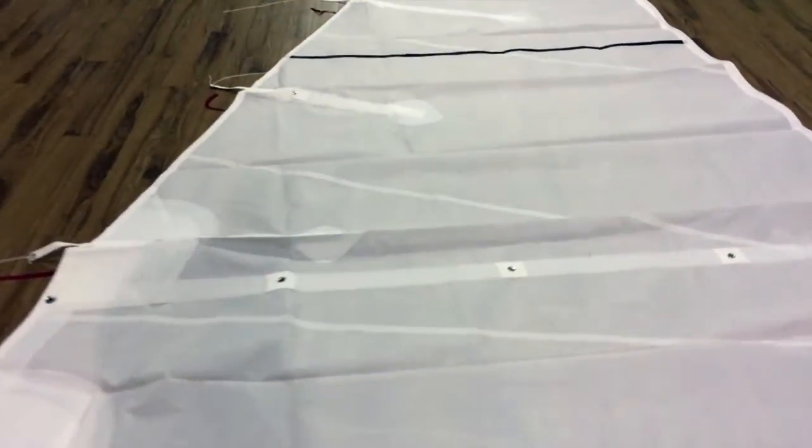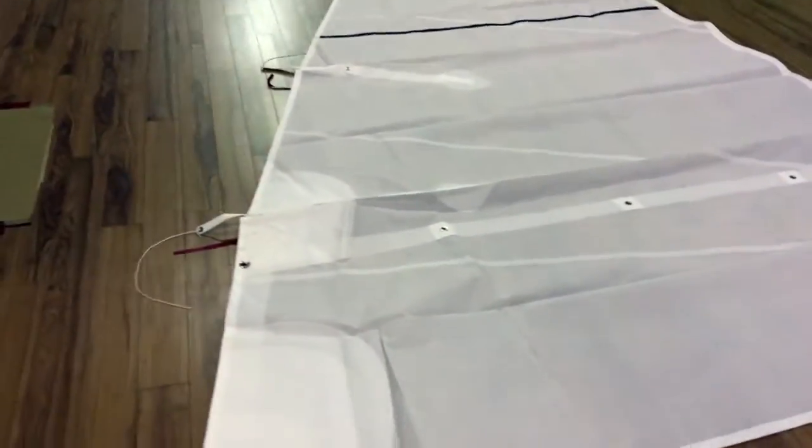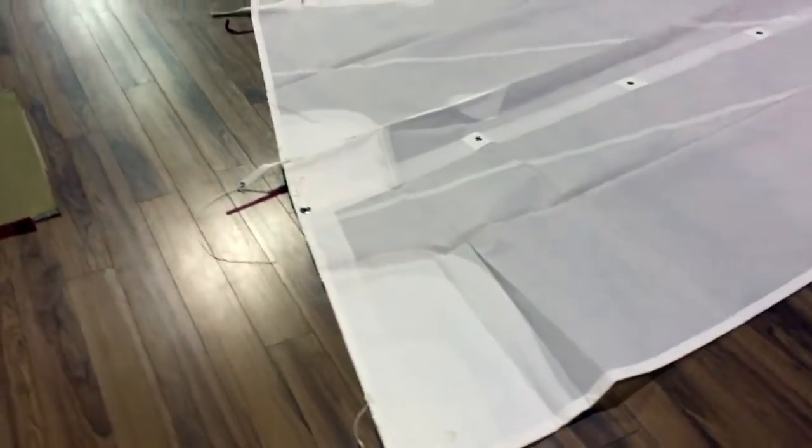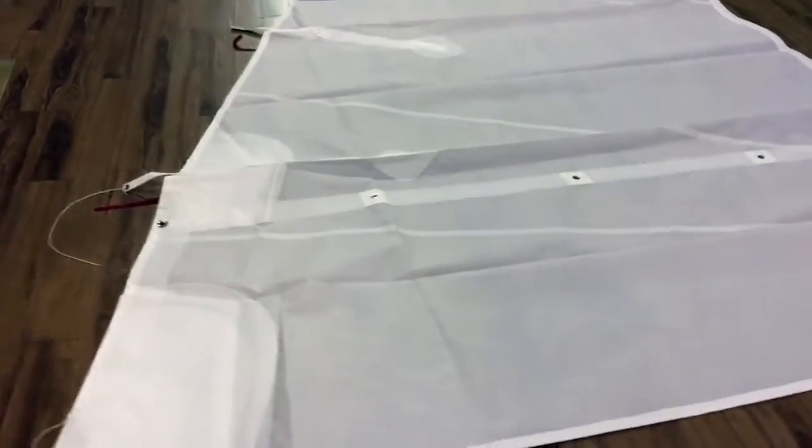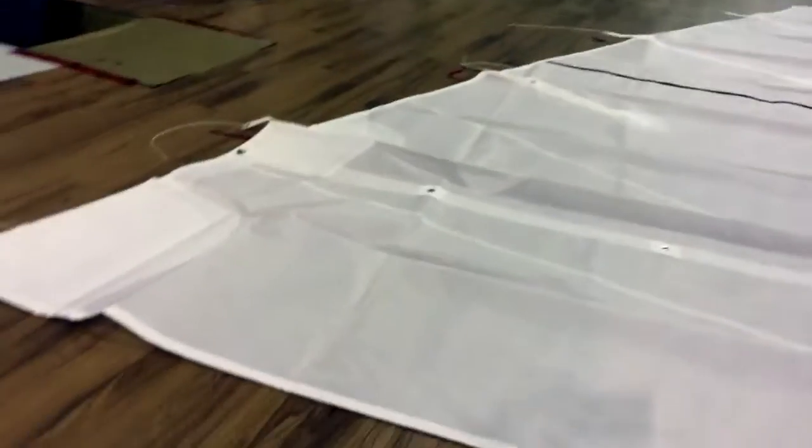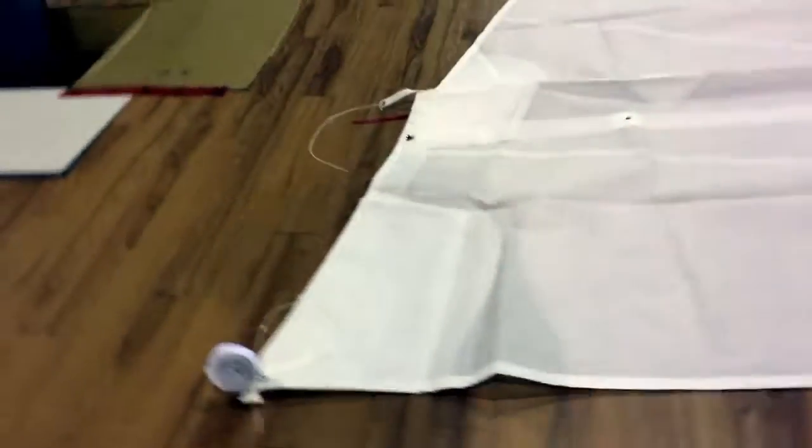So what we do is either you supply us with the One Design specs or we can typically find them off the organization's websites. But this is the Albacore One Design. Let's take a quick little walkthrough and we'll see what we've got here.